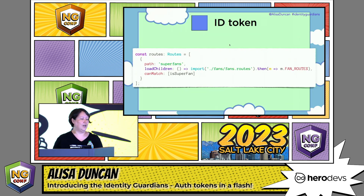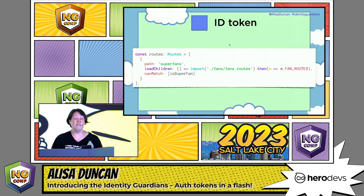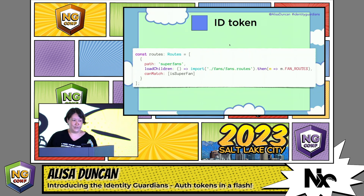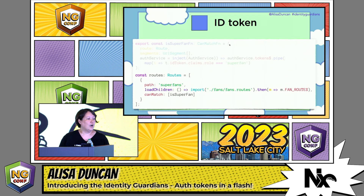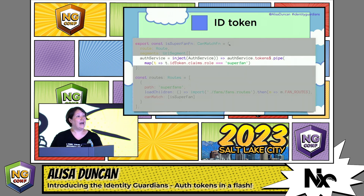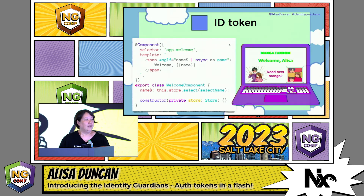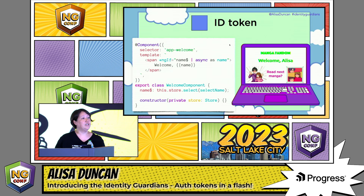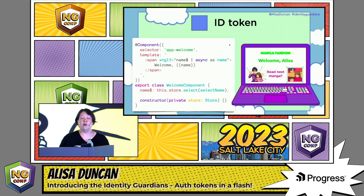A prime way to use the ID token is using the data it has. Let's say you have a route in your Angular application for superfans, because superfans should have first dibs at the latest and greatest mangas. So we can add a guard and then use the value of one of the claims as the condition. We can also use the standard identity information in the ID token to display a warm, friendly, personalized greeting without making any user calls, because it's all contained.